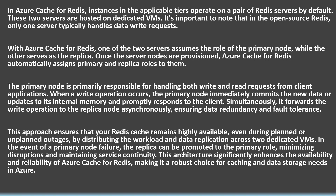When a write operation occurs, the primary node immediately commits the new data or updates to its internal memory and promptly responds to the client. Simultaneously, it forwards the write operation to the replica node asynchronously, ensuring data redundancy and fault tolerance.